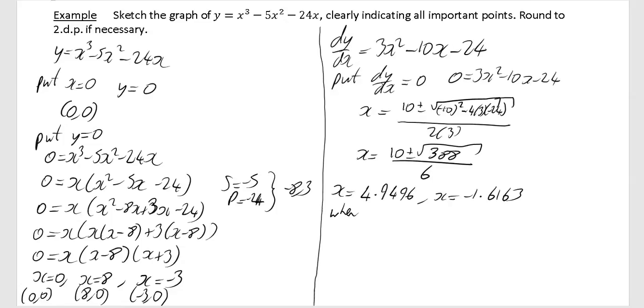After that, you've got to find the corresponding y value. When x equals 4.9496, y equals, and I haven't shown my working out, but you would just put this x back into this equation to find your y, and I find y to be minus 120.0251. I'll do the same idea for the y's at this stage. When x equals minus 1.6163, y equals 21.5066.